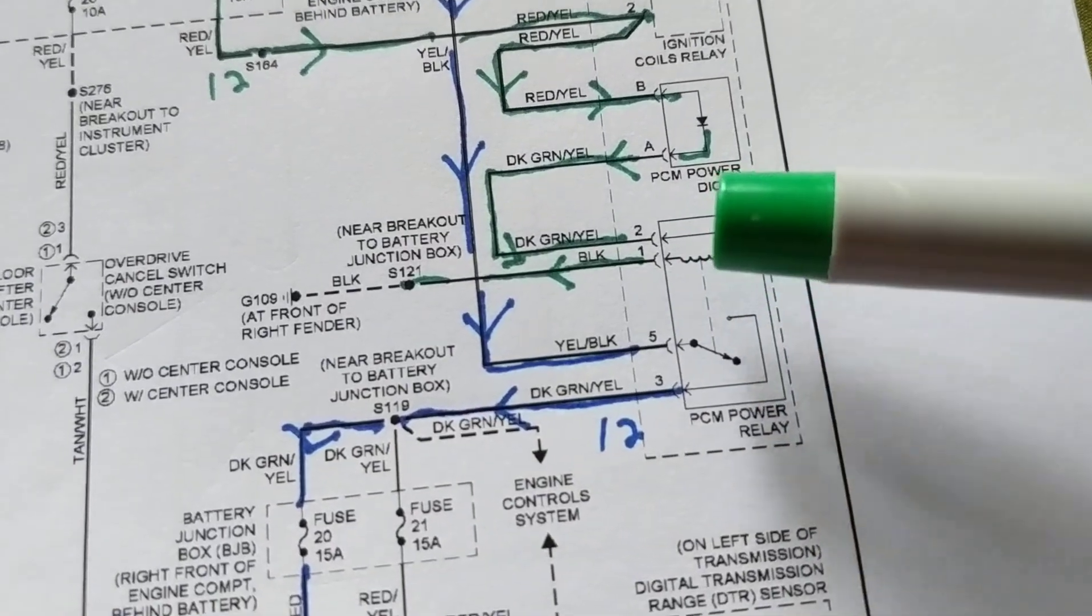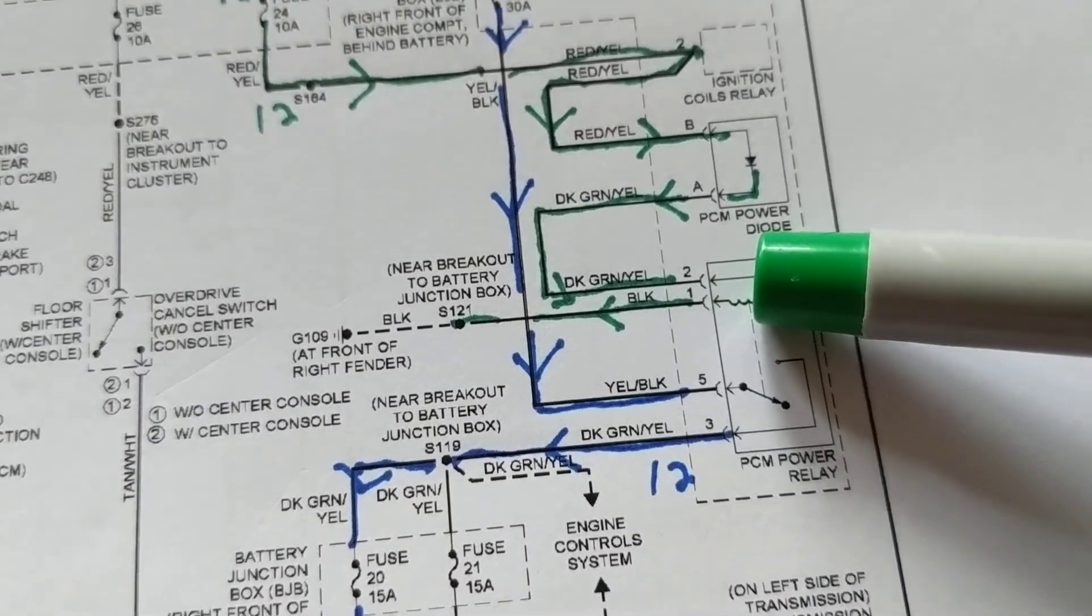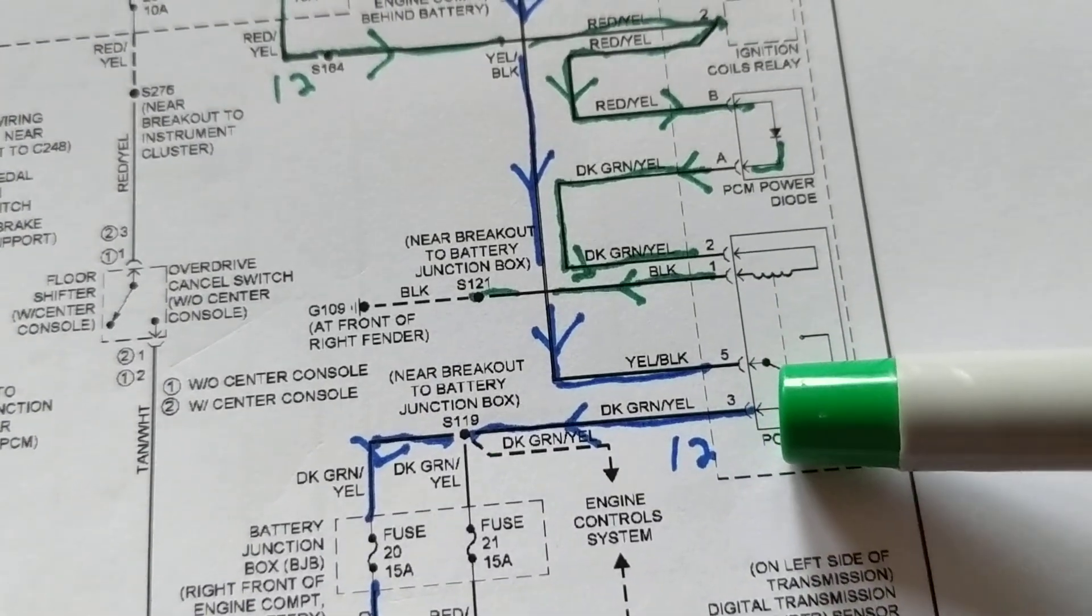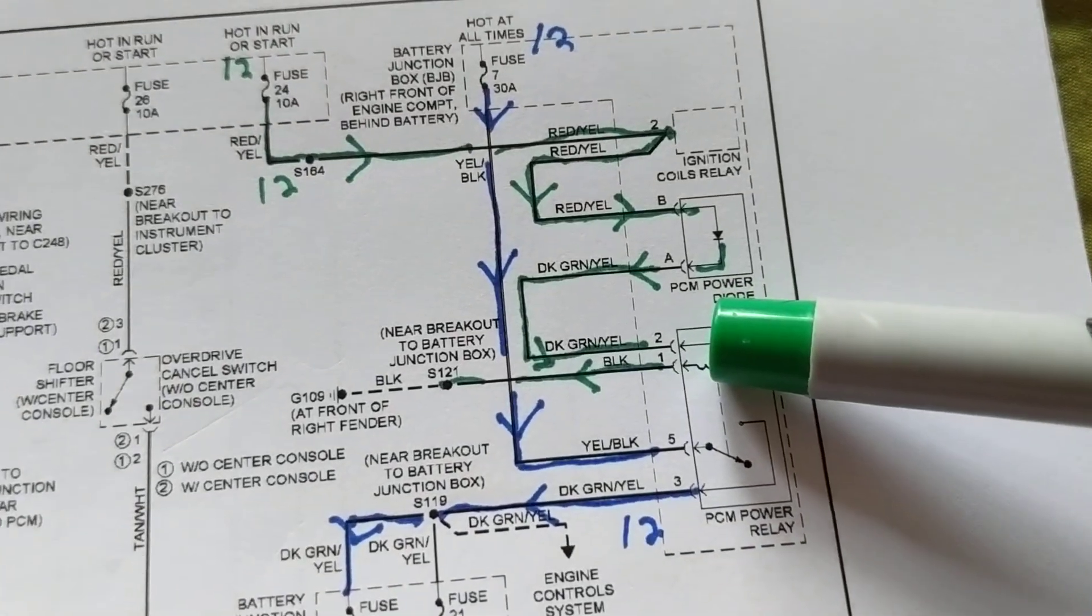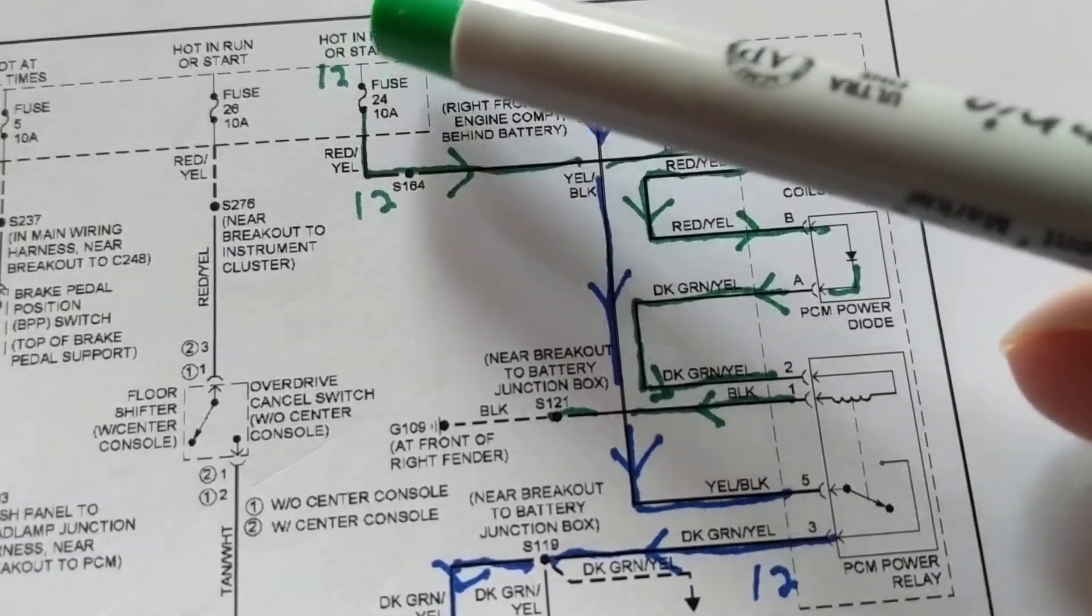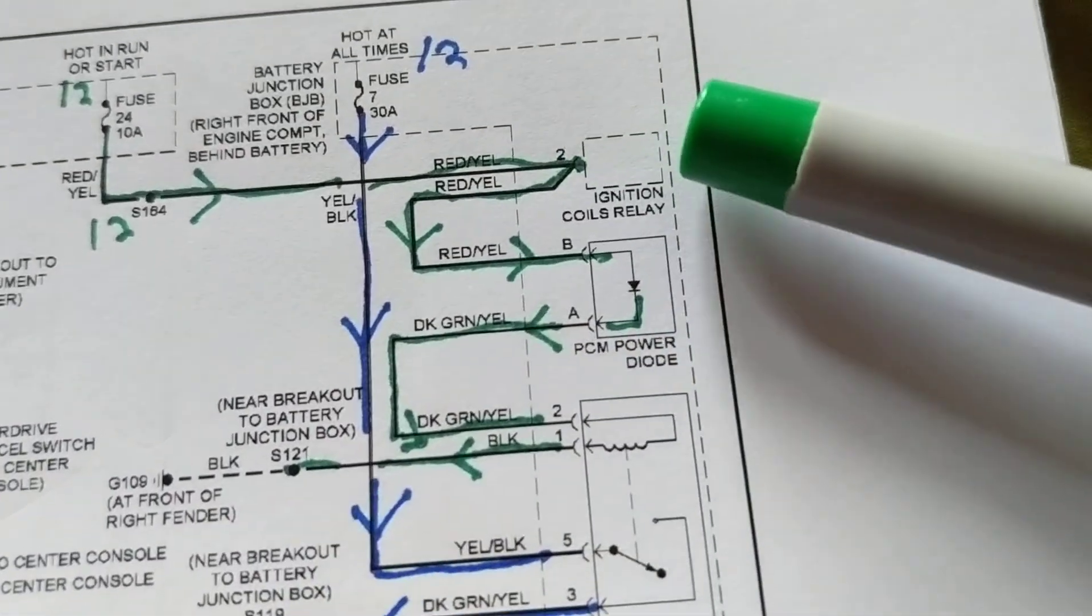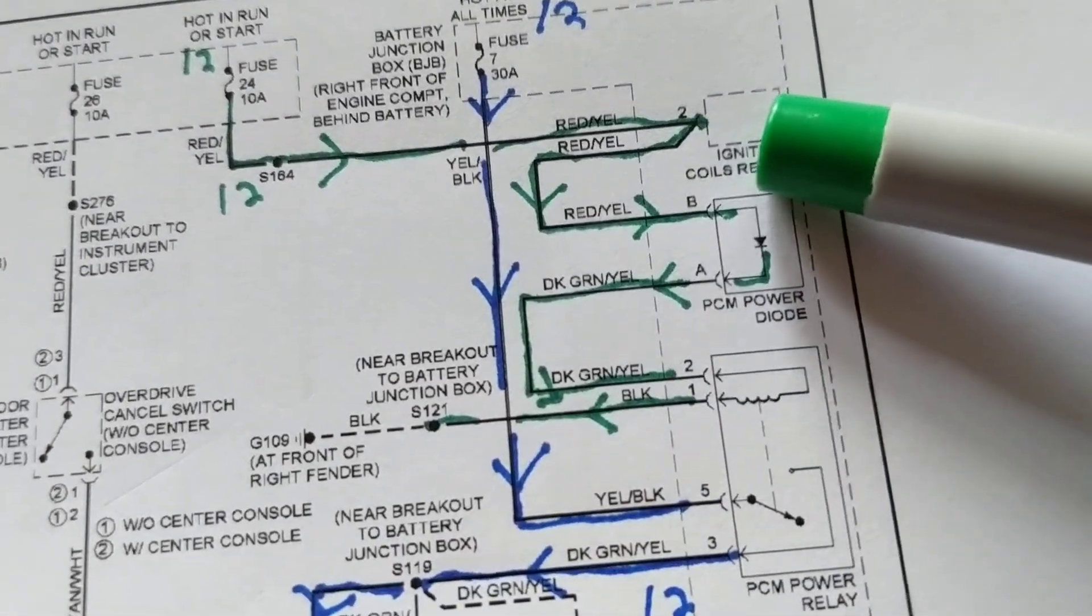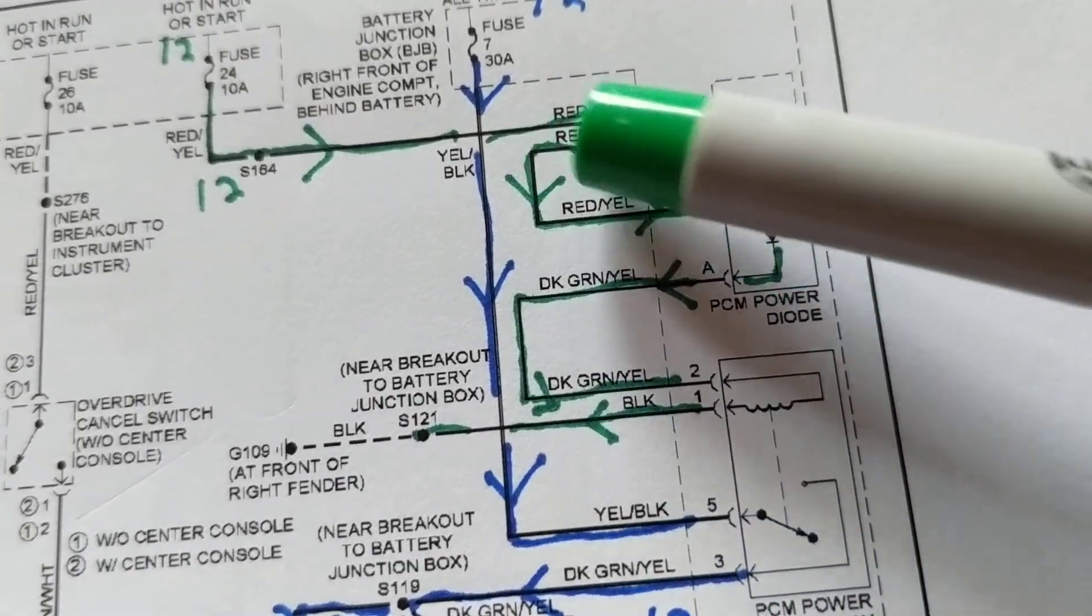So when we see this, we ask ourselves the first question: how do we get current flow through this coil? That's the first question you always ask yourself when you see a relay. Don't worry about the second part. First, take care of priority here, then this will work. How do we get current flowing through here? Let's start over here. You see this fuse over here, fuse 24, has current flowing through the red yellow wire, goes through here. Also gives ignition coils relay, also gives 12 volts to for the ignition coils. That's not a problem yet. Red yellow wire, still red yellow wire, we come into here.